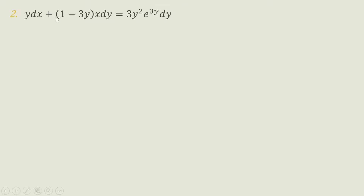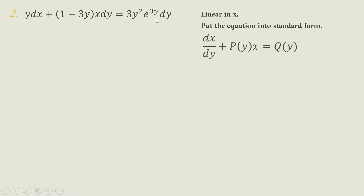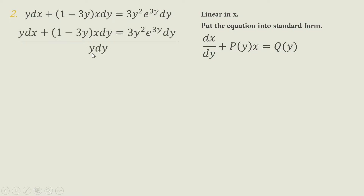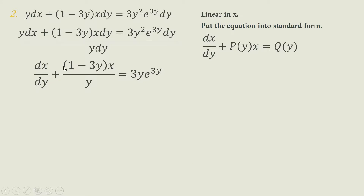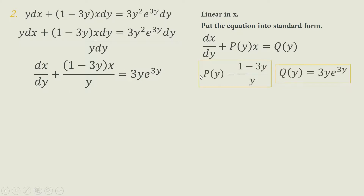For our next example: Y DX plus (1 minus 3Y) times X DY equals 3Y² e^(3Y) times DY. The first step is to put the equation into standard form using linearity in X. Dividing all terms by Y DY results in DX/DY plus (1 minus 3Y) times X all over Y equals 3Y e^(3Y). We obtain P(Y) equals (1 minus 3Y)/Y and Q(Y) equals 3Y e^(3Y).